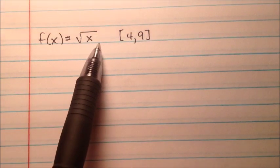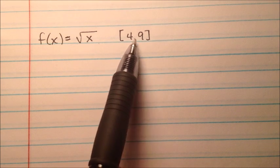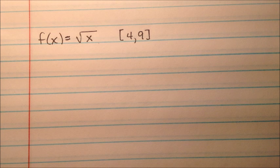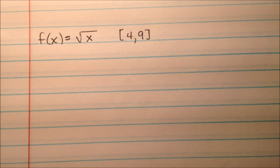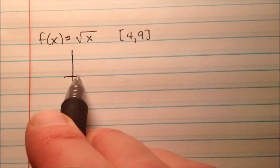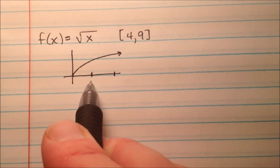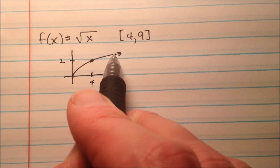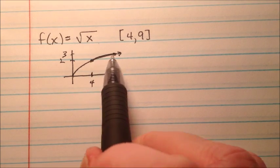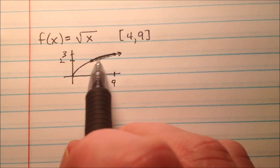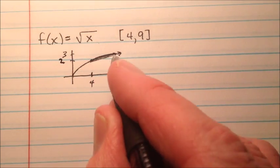This third example is not going to be as easy as a straight line with a constant rate of change. Instead, we're going to have a square root function, and the interval we care about is from 4 to 9. The square root function has some curvature to it — it's not just a straight line. So we want to know, if we were to draw a straight line — which we call the secant line — we can find the average rate of change using that secant line.